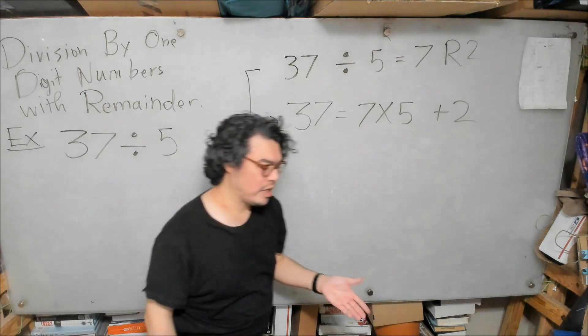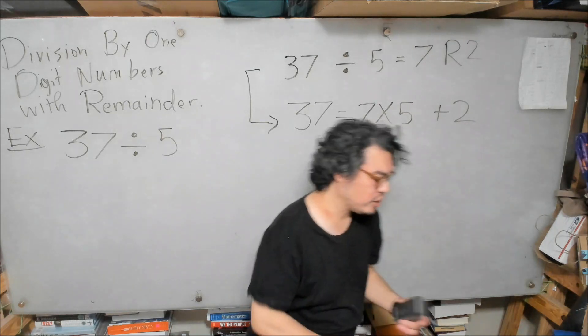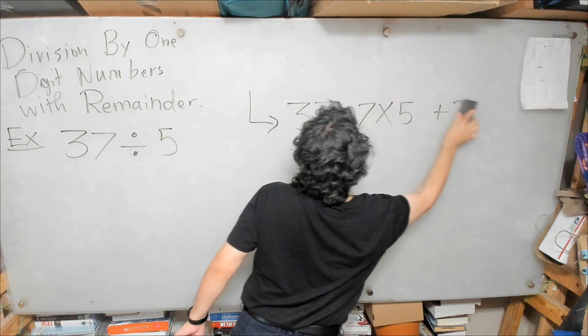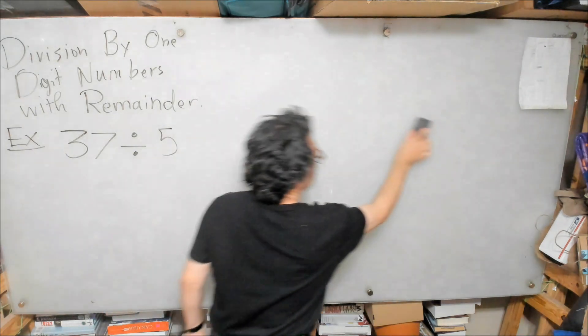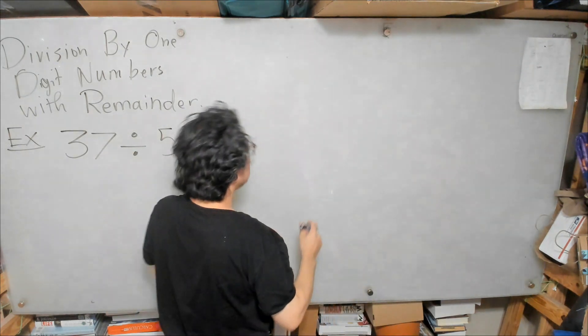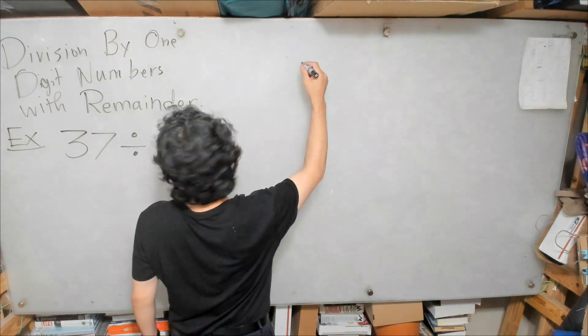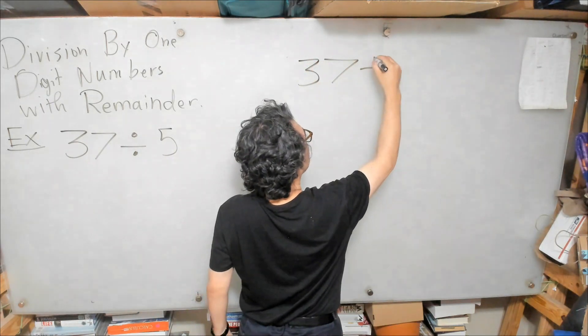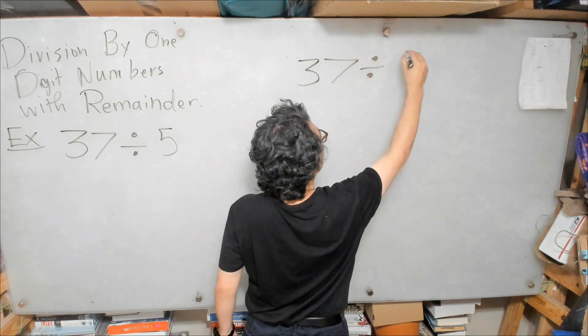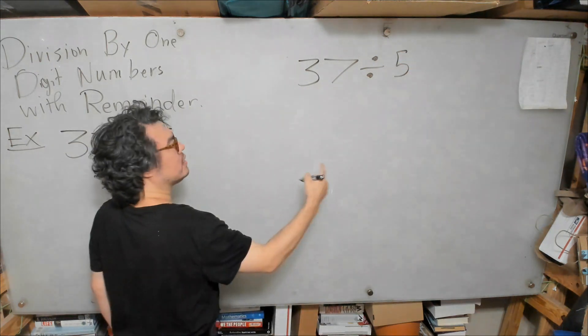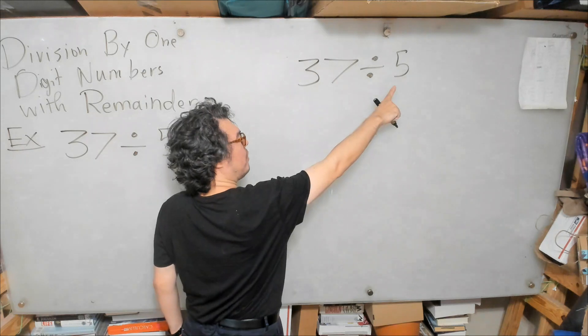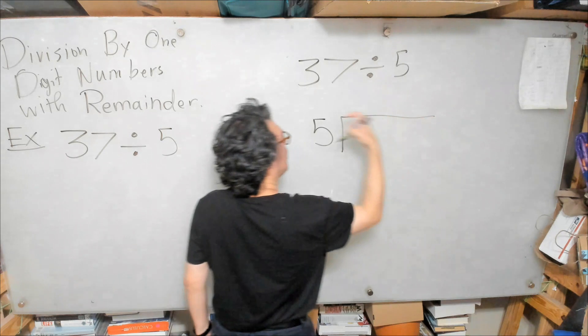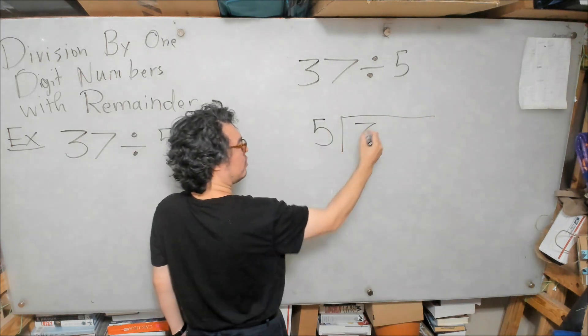Now we're going to look at it via the lens of the long division notation. The long division notation, we want to do 37 divided by 5. So we place the number we're dividing by on the outside of the house, and we place the number that we're actually dividing inside the house, 37.